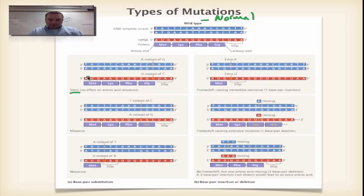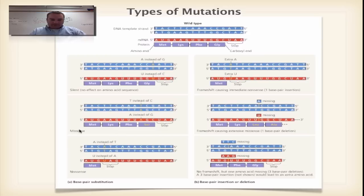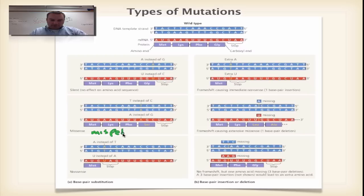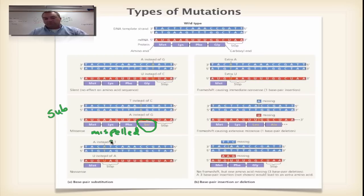Now we have a silent mutation. Looking at this spot right here, we changed that base to an A, which makes a T on the template, so the codon reads G, U, U — no change in amino acid. Everything stayed the same. Down here we have a missense mutation — think of it like misspelled. We substituted a T instead of a C, and we've only changed one amino acid. The first three are the same, but instead of glycine, we now have serine. That's a missense mutation.